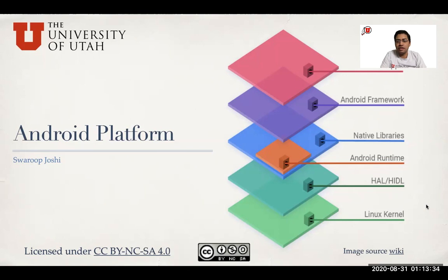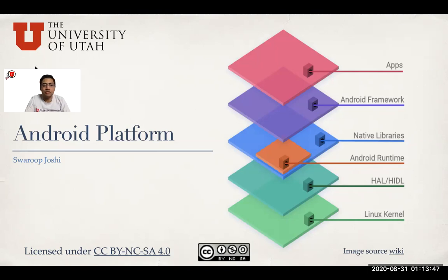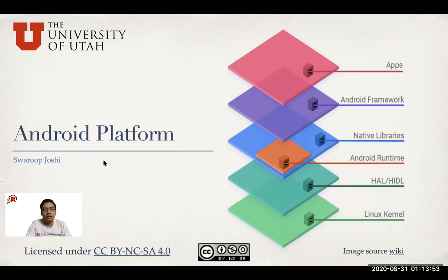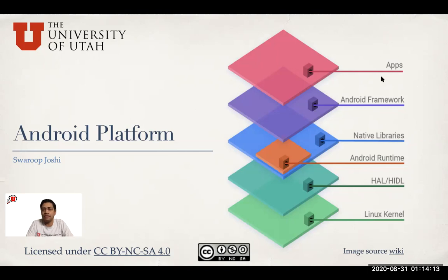Hello and welcome to our second lecture in this course. In this lecture, we are going to talk about the Android platform, the full stack of the Android programming infrastructure or the architecture. On this screen, you see a stack of different layers. This figure is taken from Wikipedia, which is an open source platform. We see different layers starting from the Linux kernel at the bottom all the way to the apps at the top, and we are going to discuss everything about this stack of layers in this video.